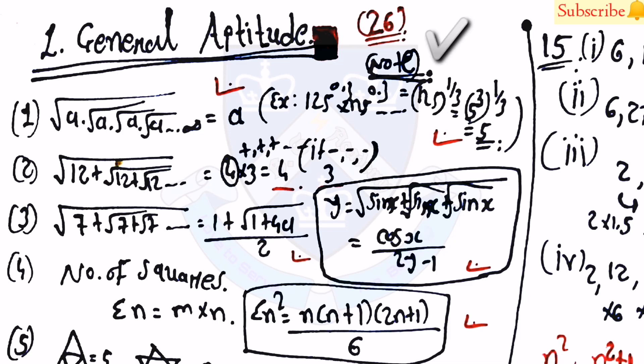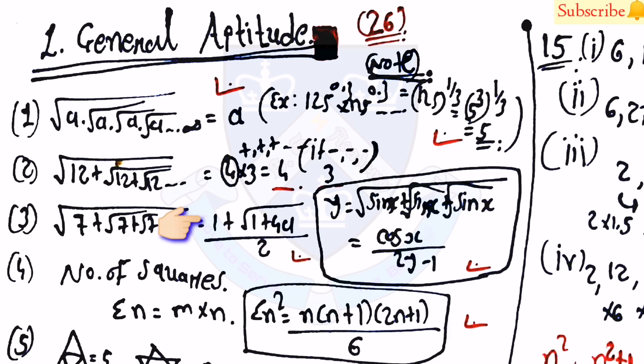Questions from General Aptitude look very difficult, but once you go through the notes, you can solve them in 2 to 3 seconds. For √7 + √7 + √7 + ... up to infinity, since 7 is a prime number you cannot split it, so use the formula (1 + √(1 + 4a)) / 2, where a = 7. Similarly, if y = √(sin x) + √(sin x) + ... up to infinite terms, the answer is cos x / (2y − 1).